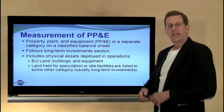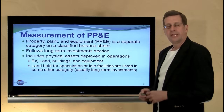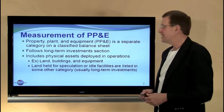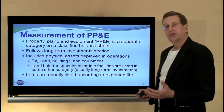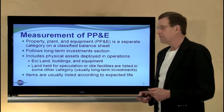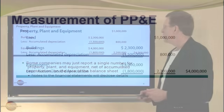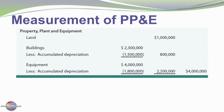Property, plant, and equipment is for the active, tangible, productive assets used by the business. Items are usually listed by expected life. Land is listed first — it has an indefinite or permanent life — followed by buildings, which have a fairly long but not permanent life, and then equipment, which might have a much shorter life, such as three, five, or ten years.